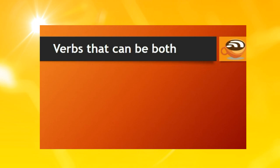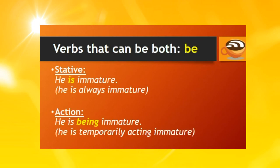Some verbs can be both action verbs and stative verbs, depending on their meaning and context. For example, the verb 'be': if you say 'he is immature,' be is a stative verb, meaning he is always immature. But if you say 'he is being immature,' then be is an action verb, meaning he is temporarily acting immature.